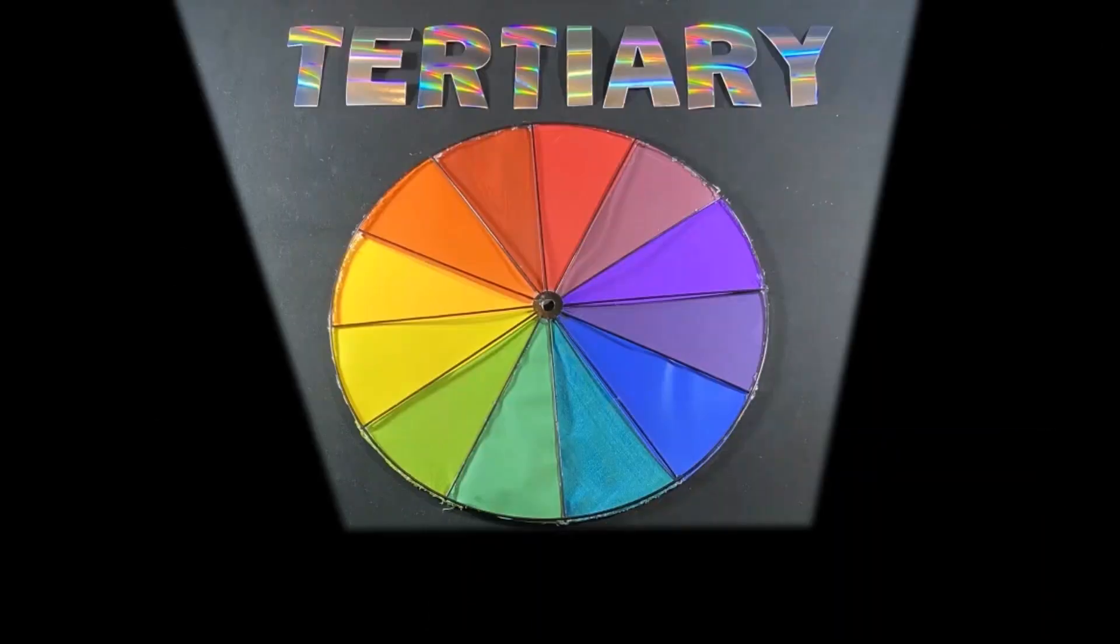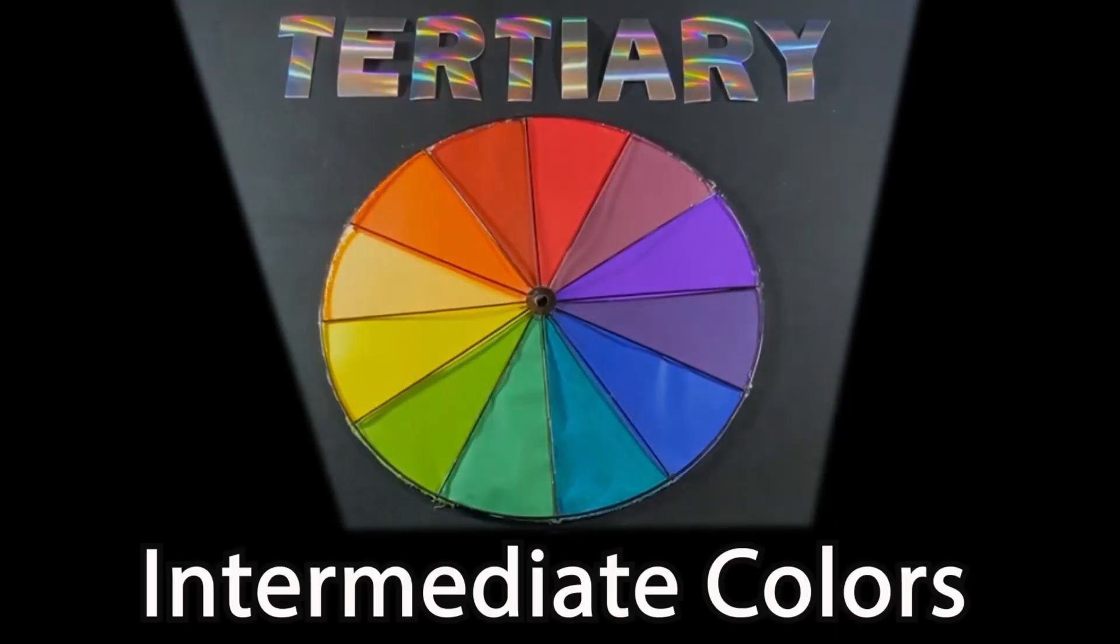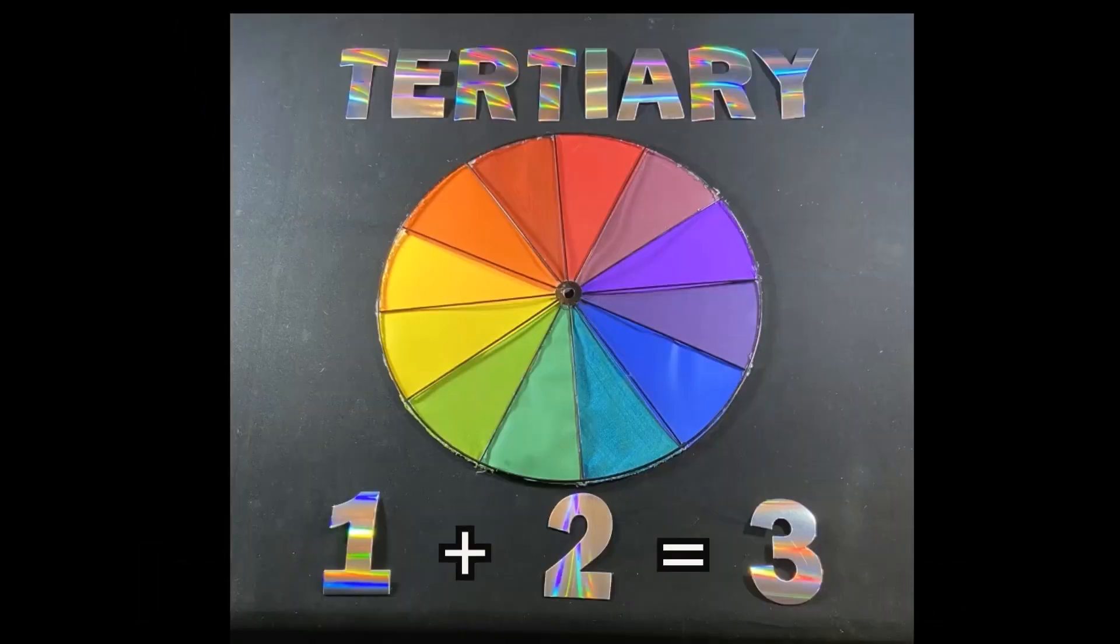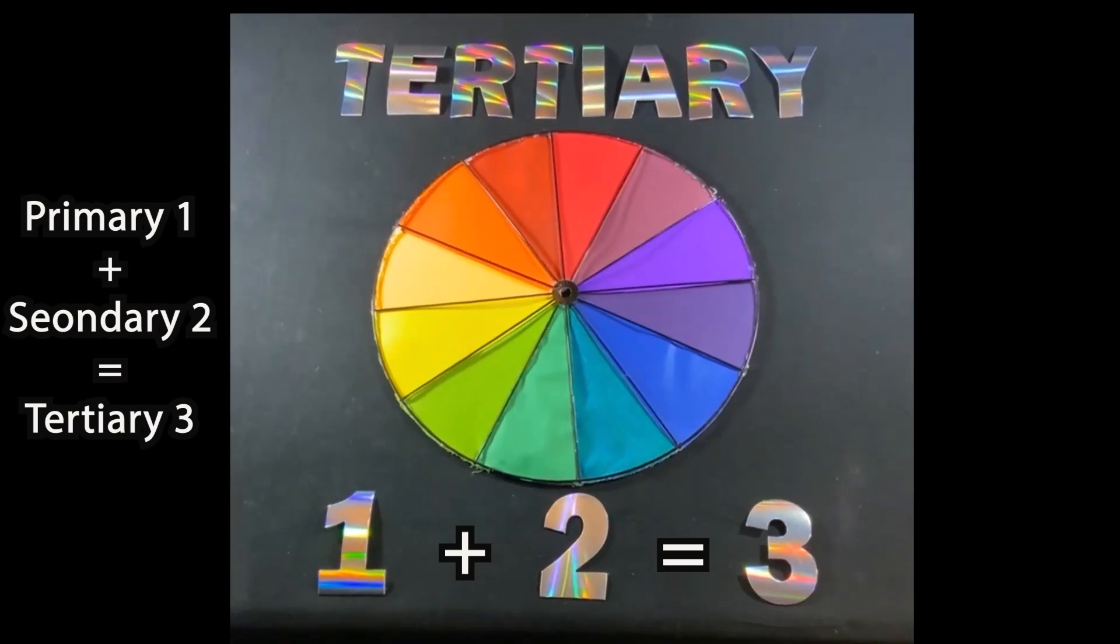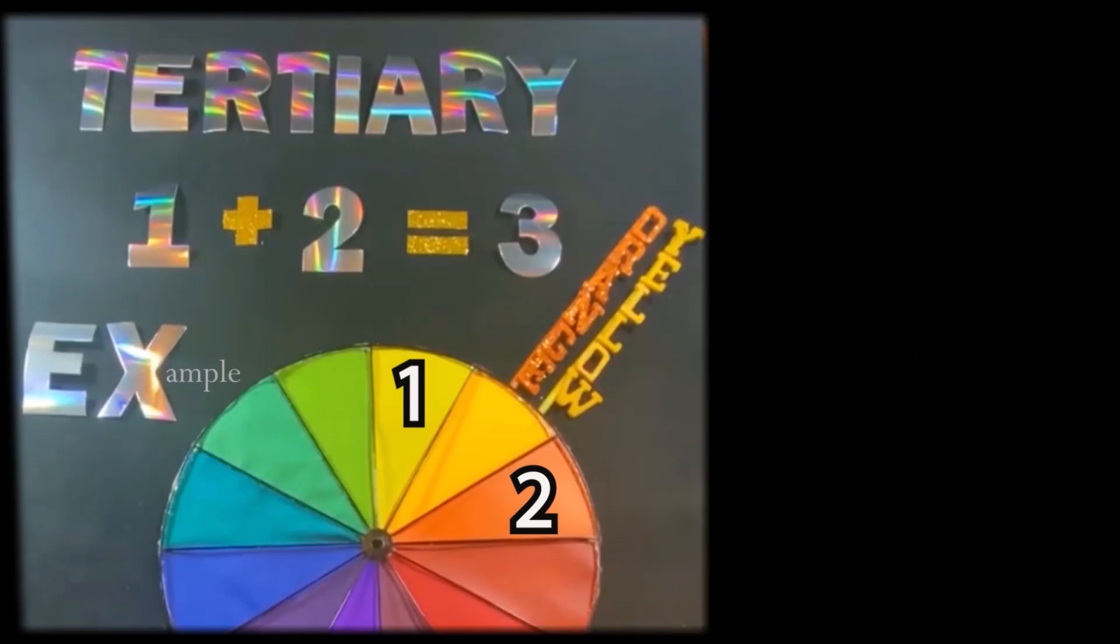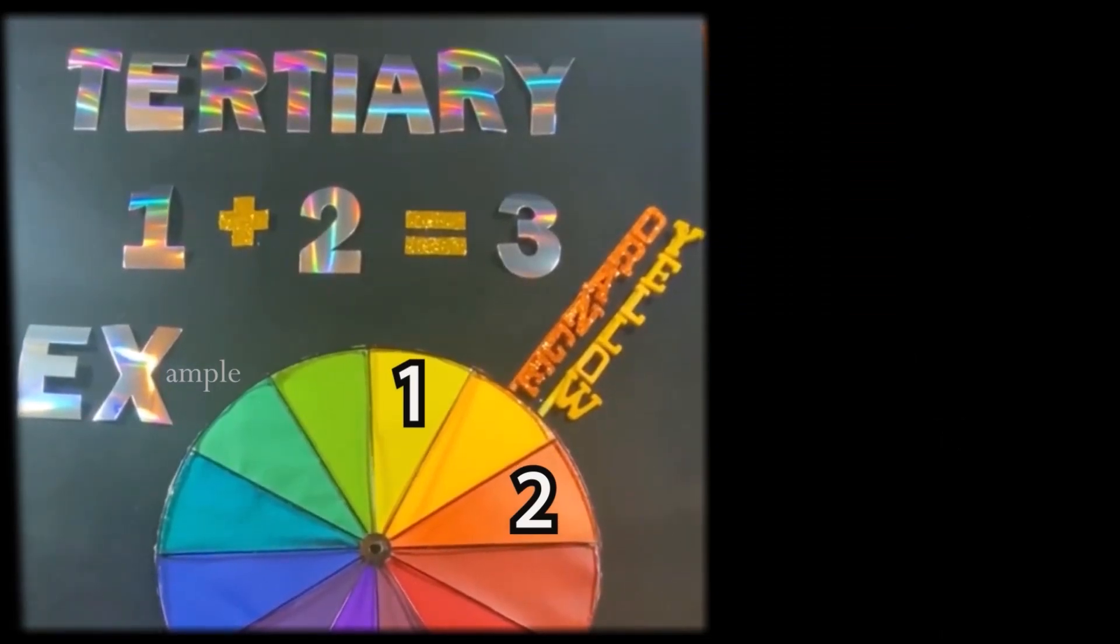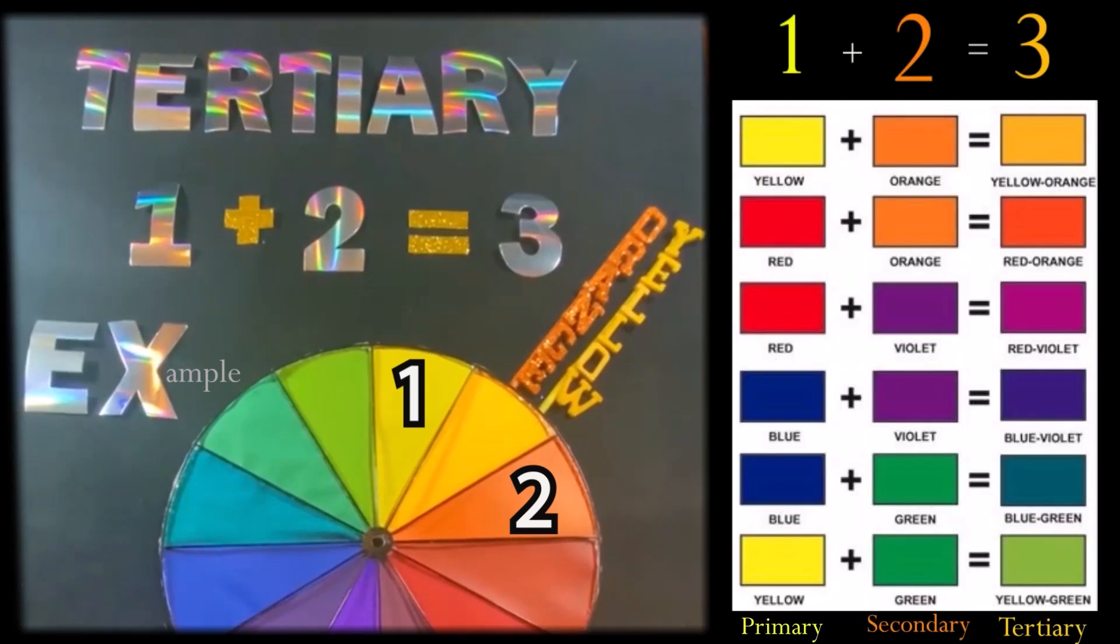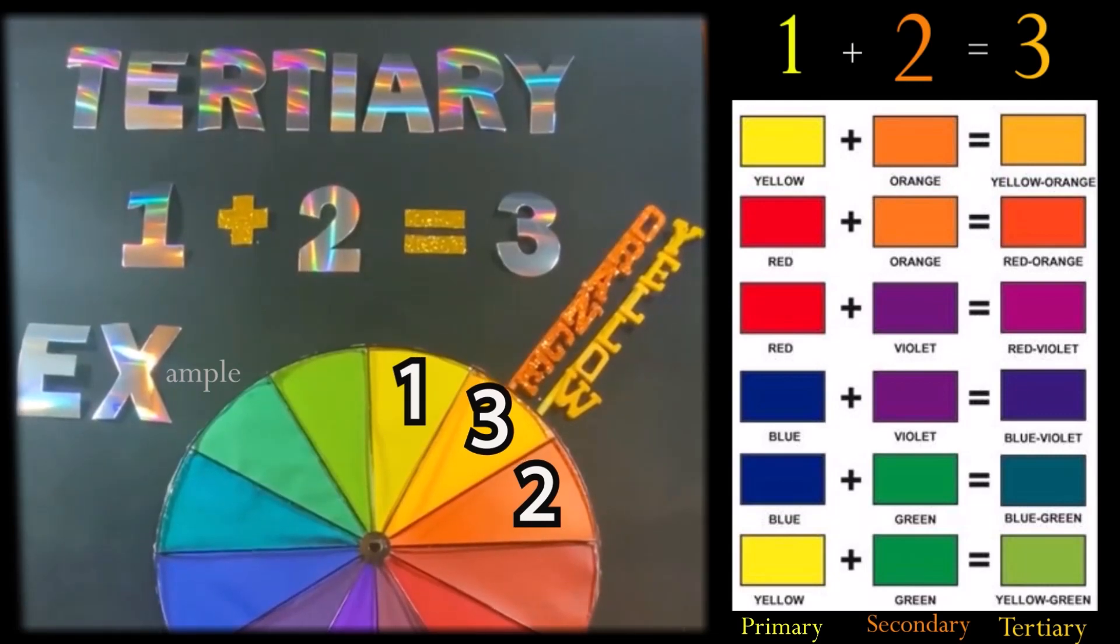Tertiary. Tertiary intermediate colors. Think 1 plus 2 equals 3. Primary and secondary equals tertiary. Third level or 3. Tertiary colors are an equal combo of primary and secondary parts. Usually named after the primary and secondary names in the color theory arts.